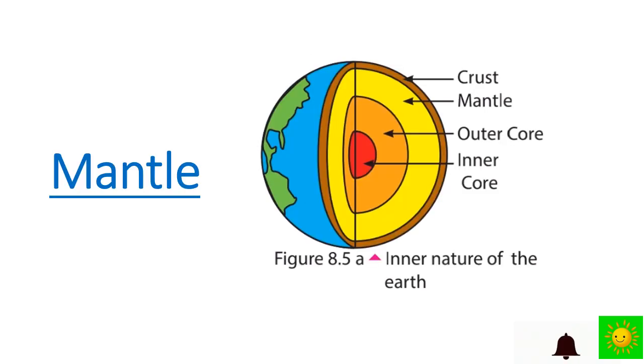Next, mantle. Underneath the earth's crust lies the mantle. Its thickness is about 2,900 kilometers. It consists of rocks. These rocks contain oxygen, silicon, magnesium and iron. The upper part consists of solid rocks. The lower part is made up of molten rocks due to the extreme hot environment.